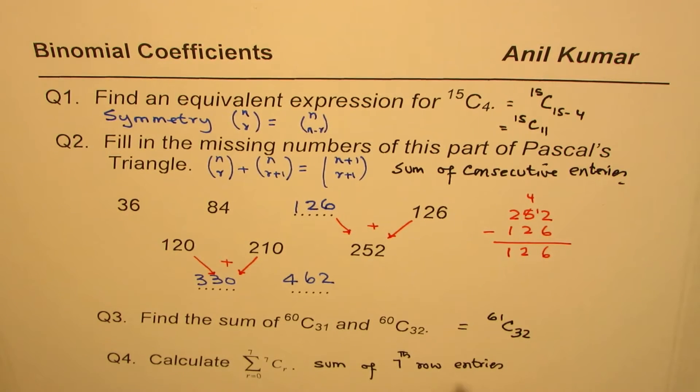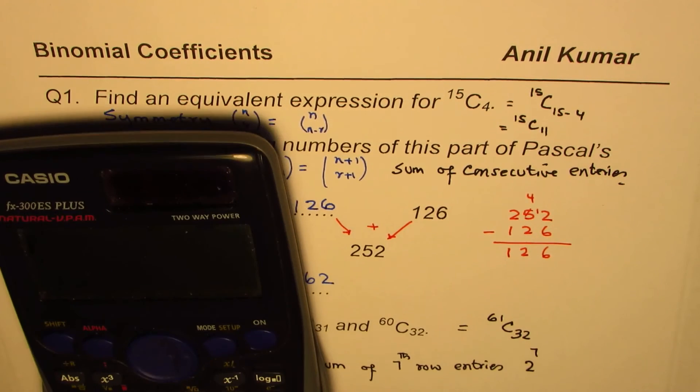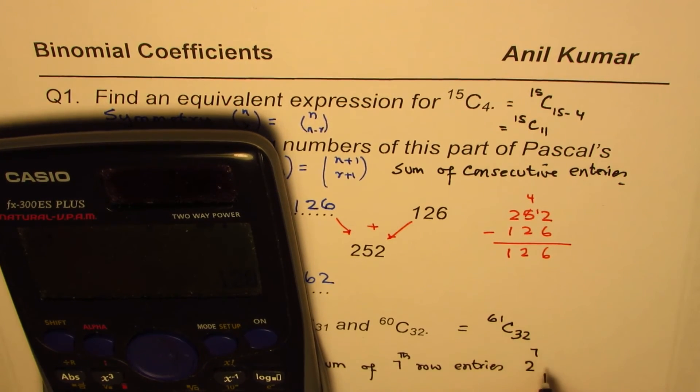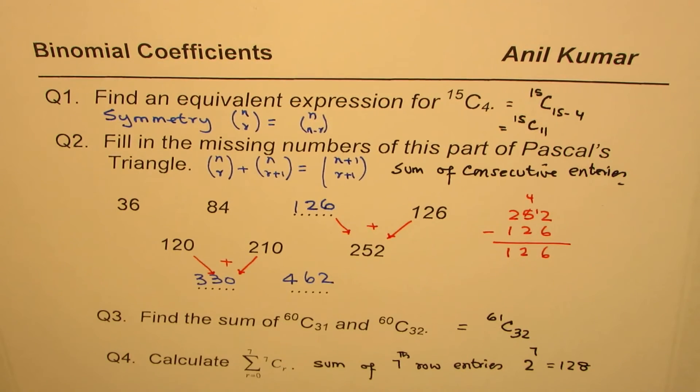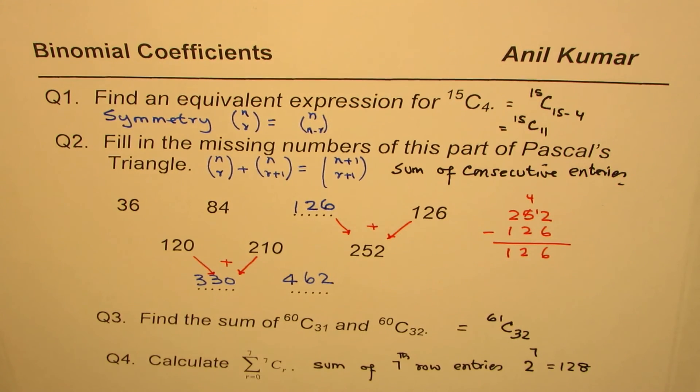And as you know from the property, we know that should be 2 to the power of 7. So let's calculate 2 to the power of 7: it is 2 exponent 7 equals 128. So we have used another property of Pascal's triangle and their relation with binomial coefficients to find the result. We'll have a few more practice so that we understand these basic properties and move on with some interesting questions.